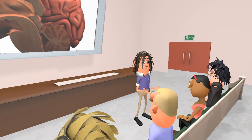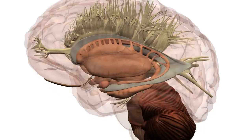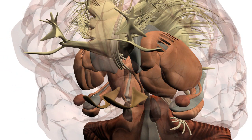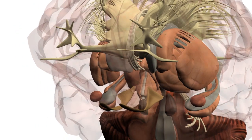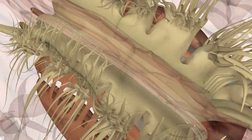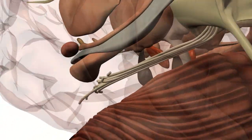The final bundle we should look at here is the cingulum. This is a longitudinal fibre tract that is contained within the cingulate gyrus, following it from the subcallosal gyrus of the frontal lobe beneath the rostrum of the corpus callosum, passing longitudinally along its superior surface and ending in the parahippocampal gyrus and uncus of the temporal lobe.